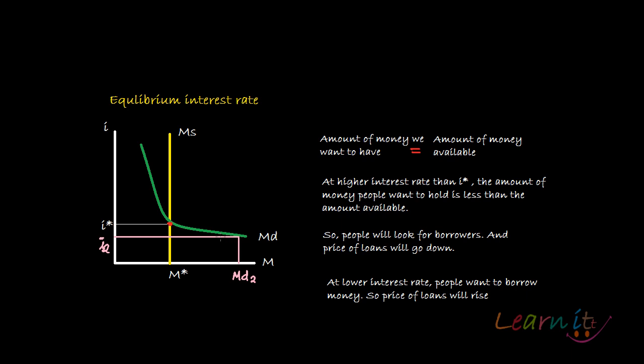So the price of loans has to rise in order for equilibrium to be maintained. At a lower interest rate, more people want to borrow money than lenders can loan out. Lenders tell borrowers they can't lend that much at such a low interest rate, so borrowers agree to a higher rate of interest, and equilibrium is maintained in the market.